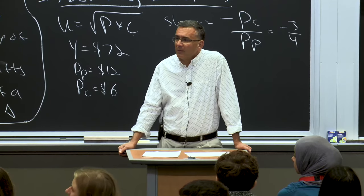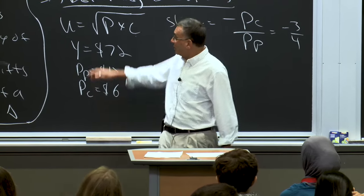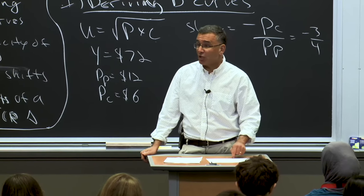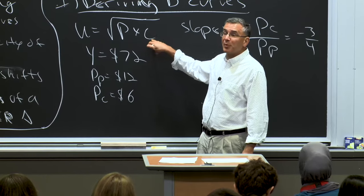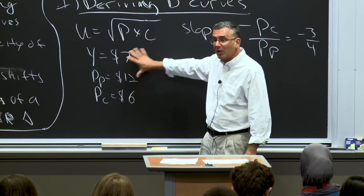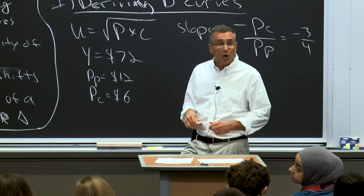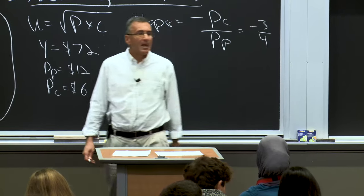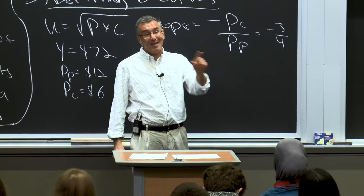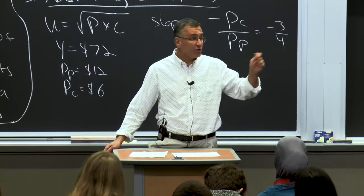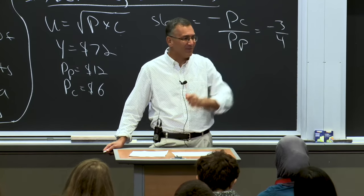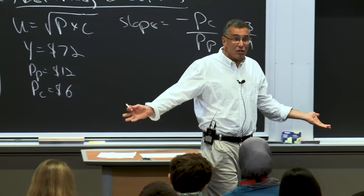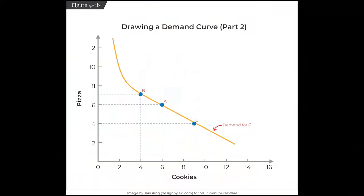A student asks: does changing prices also change the indifference curves? No — indifference curves are determined by the utility function. It changes which indifference curve you end up choosing because the tangency point changes, but the only way to change the indifference curves would be to change the utility function. Indifference curves come purely from the utility function; the budget constraint comes from income, prices, and that's it. You can aggregate demand curves across people, but you can't add up indifference curves because utils are not a real thing.